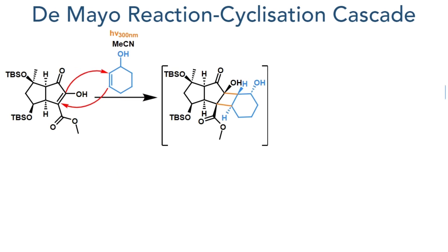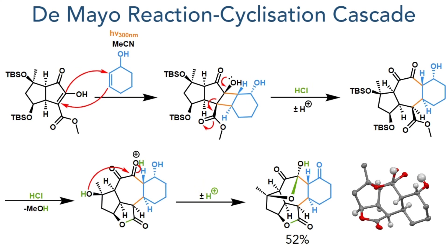With this enol now constructed, they could then carry out the critical de Mayo reaction cyclisation cascade. The compound was dissolved in acetonitrile and 2-cyclohexenol was added. After degassing, the mixture was photo-irradiated at 300 nanometres at minus 20 degrees for 20 hours. This promoted a cycloaddition between the double bond of the enol and the double bond of the cyclohexene. This intermediate proved to be quite unstable, so they took advantage of this and developed a cyclisation cascade. The reaction was warmed to room temperature and hydrochloric acid was added, which promotes a fragmentation reaction where one of the carbon-carbon bonds of the cyclobutane moiety fragments together with the formation of a ketone from the hydroxyl group.